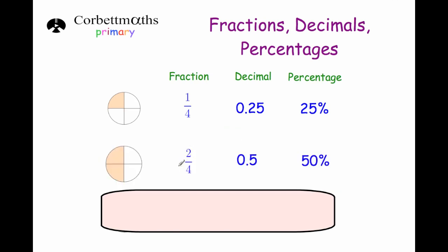Our next one is 2 quarters. We've shaded in two of the four sections, which is the same as a half. So as a decimal number it's 0.5, and as a percentage it's 50%. 2 quarters is the same as a half because it's an equivalent fraction — it can be cancelled down. You'd probably just see it written as 1 half, which is 0.5 and 50%.